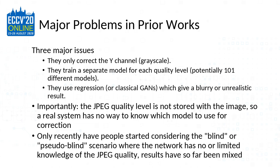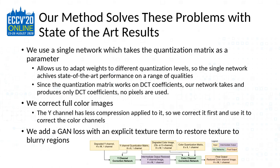Most importantly, the JPEG quality level is not stored with the image. So if you deployed this in a real system, there's no way to know which of the potentially 101 different models to pick for correction. Only very recently have people started considering blind or pseudo-blind scenarios where the network has no knowledge of JPEG quality, and the results have been pretty mixed. There's also been a few methods that treat color with similar mixed results.